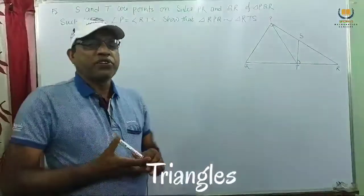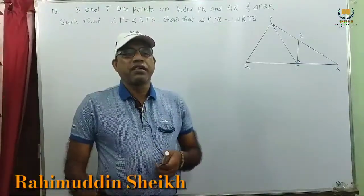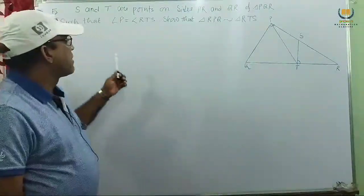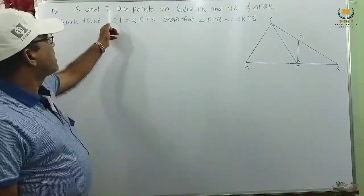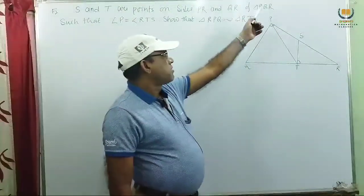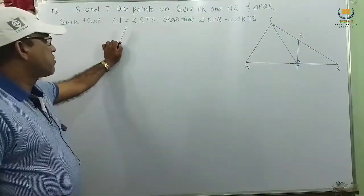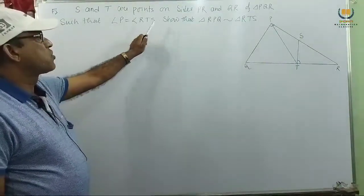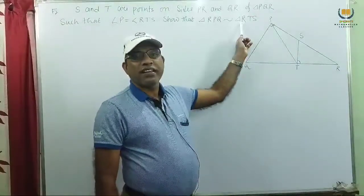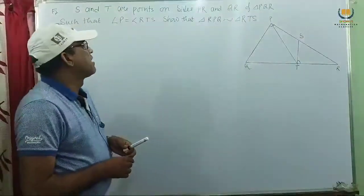Dear students, today we consider problem number 5, exercise 6.3, from the Intuitive book class 10. So the problem 5 is given: in triangles, S and T are points on sides PR and QR of triangle PQR such that angle P equals angle RTS, and we have to show that triangle RPQ is similar to triangle RTS.